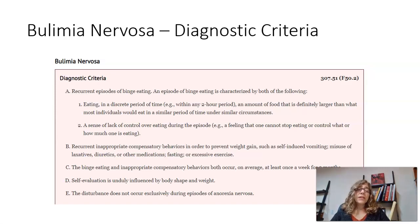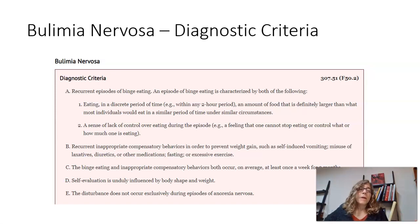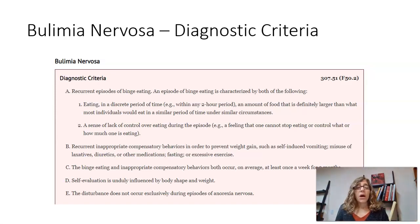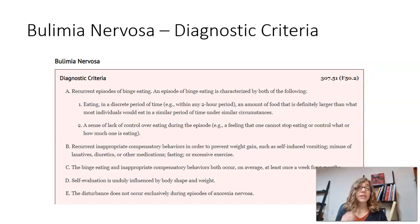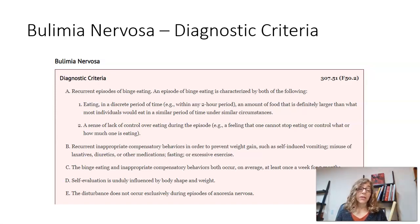In bulimia we typically see average or slightly above average weight. When you see someone who is really underweight and tells you she binges and purges, you're more likely looking at anorexia binge-purge type. With bulimia you're usually looking at someone average to slightly above average weight, because you can't rid the body of that caloric intake — all the purging may get rid of maybe 50 percent of the calories, so if someone took in 10,000–15,000 calories, the body still absorbs 5,000–7,000 of them.